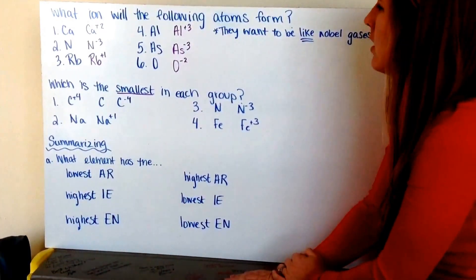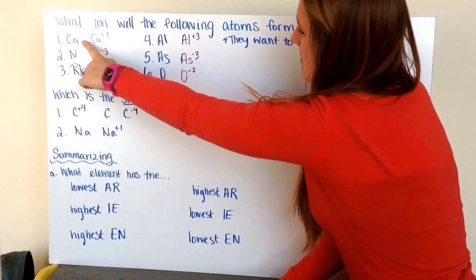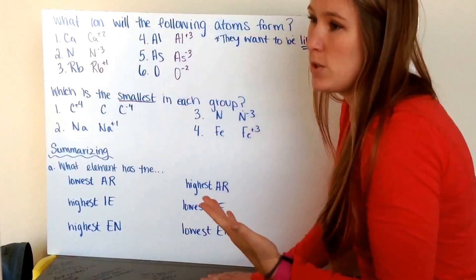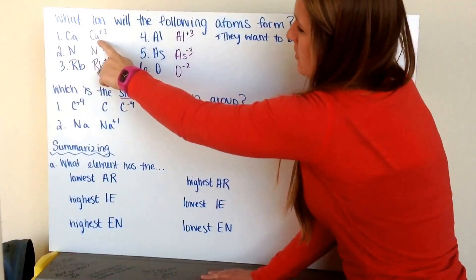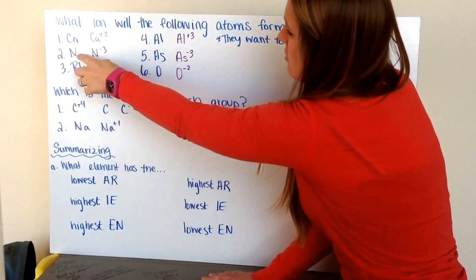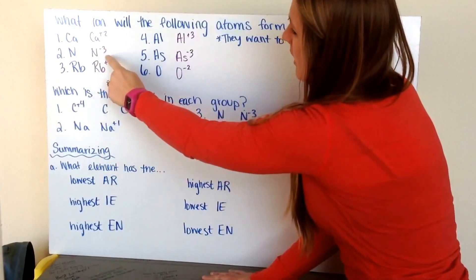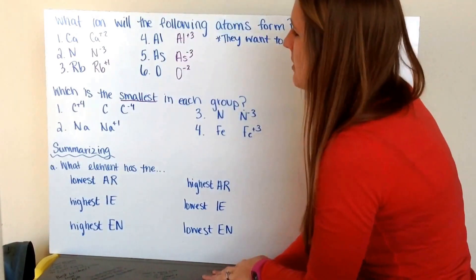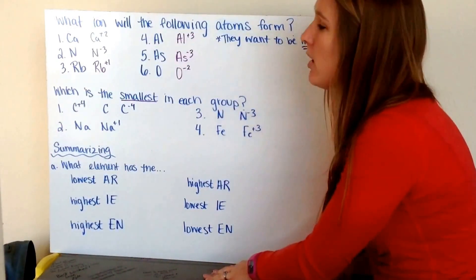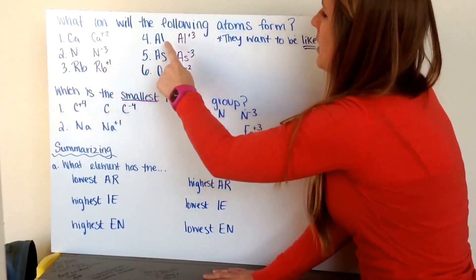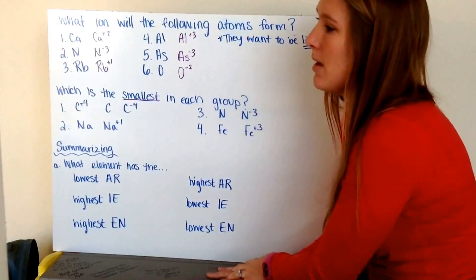For the following ions, we want to see which ion each atom will form. We locate where they are on the periodic table. Calcium is in my second group and is going to want to remove two electrons to become its last noble gas, so we get calcium plus two. Nitrogen is three spaces away from its noble gas, so it's going to add three electrons to have a stable electron configuration. Rubidium is in group one — it wants to lose one electron, making it Rb plus one. Aluminum is in its third group, so it wants to lose three electrons to achieve a noble gas configuration.